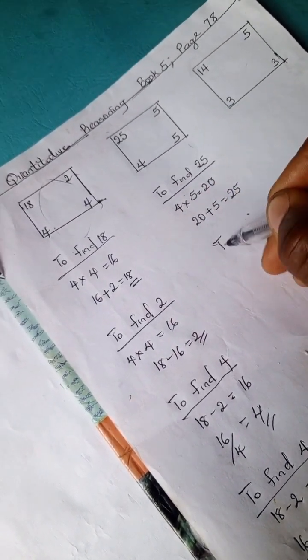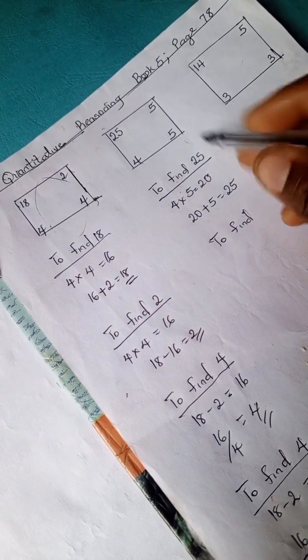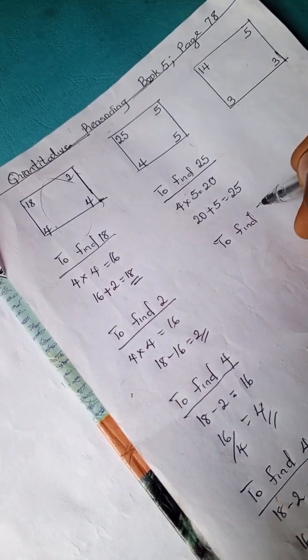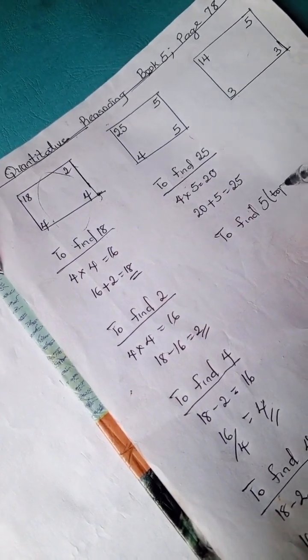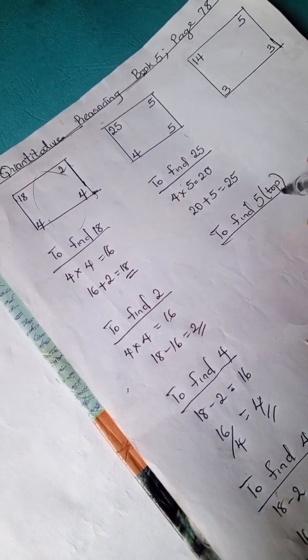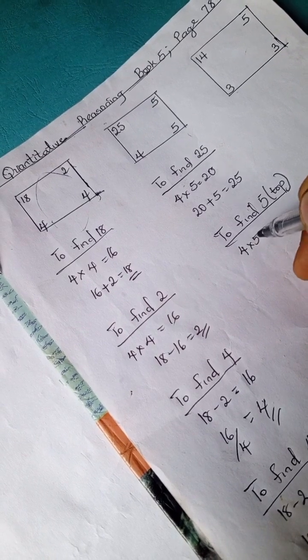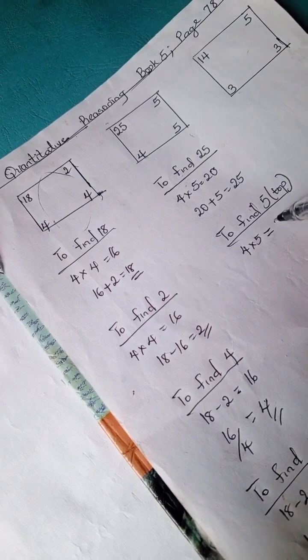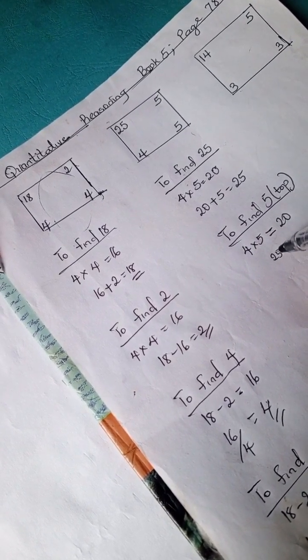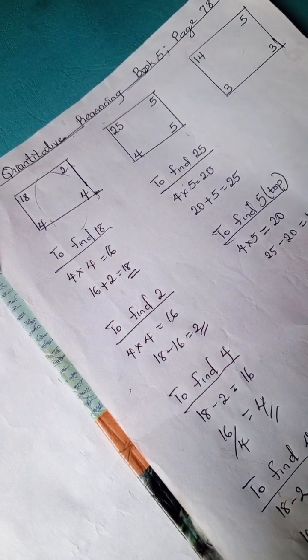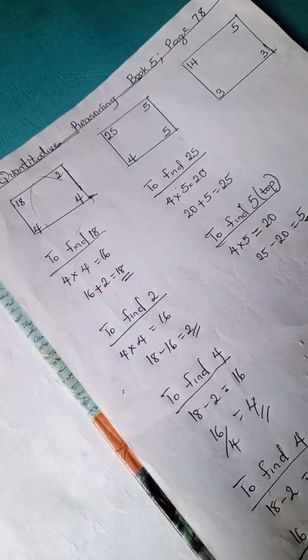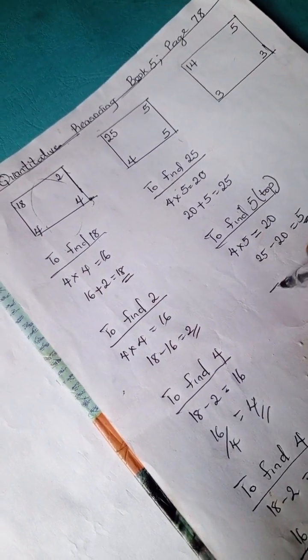So we have to find 5, the 5 at the top. Let's indicate that to find 5. So we can say 4 times 5 is 20. 25 minus 20 is 5.